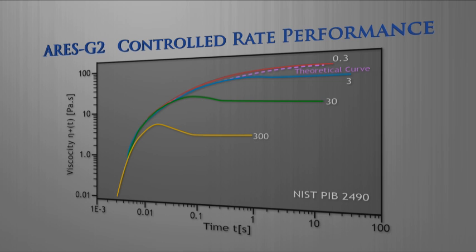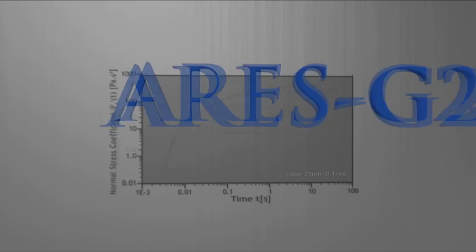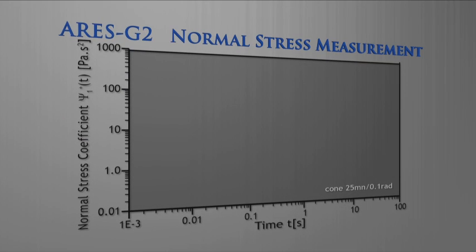The measured viscosity curves demonstrate the fast and accurate 10 millisecond motor response of the ARES G2. Time-dependent normal stress coefficient describes a material's elastic behavior. The measured curve meets the linear viscoelastic envelope at 50 milliseconds. This outstanding short-time performance is attributed to the combination of fast motor response and high transducer stiffness.